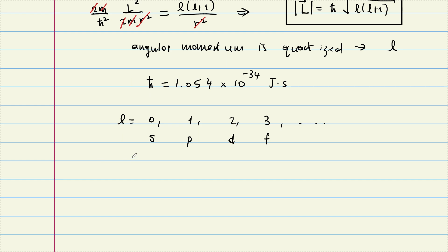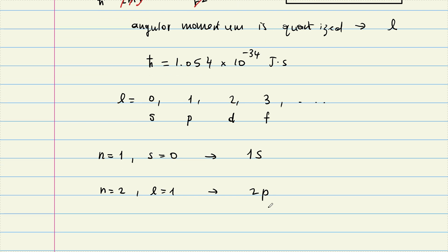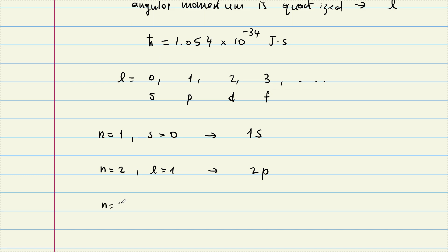The way we denote quantum numbers: we don't say 'n=1, l=0' separately; we just say '1S'. So when someone gives you 1S, you immediately know both quantum numbers. Another example: n=2, l=1 is written as 2P. And n=3, l=2 is written as 3D orbital.